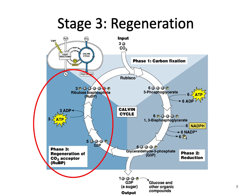The third stage in the Calvin cycle is the regeneration or reformation of RuBP. In this stage, some of the G3P molecules will exit the cycle and go towards glucosynthesis, while others must be recycled to regenerate the RuBP. As you can see here, the regeneration of RuBP requires another three ATP molecules.